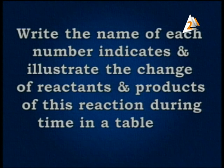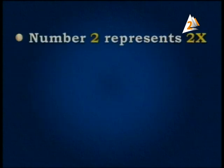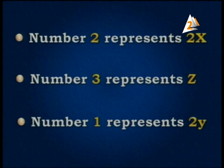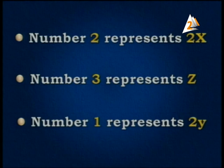Write the name of each number that indicates the change in reactants and products in this reaction during time in a table. The answer: number 2 represents 2X. Number 3 represents Z. And number 1 represents 2Y, because number 1 is the highest in the number of molecules — 2Y is the highest number of molecules in the product. Z is number 3, and number 2 represents 2X.